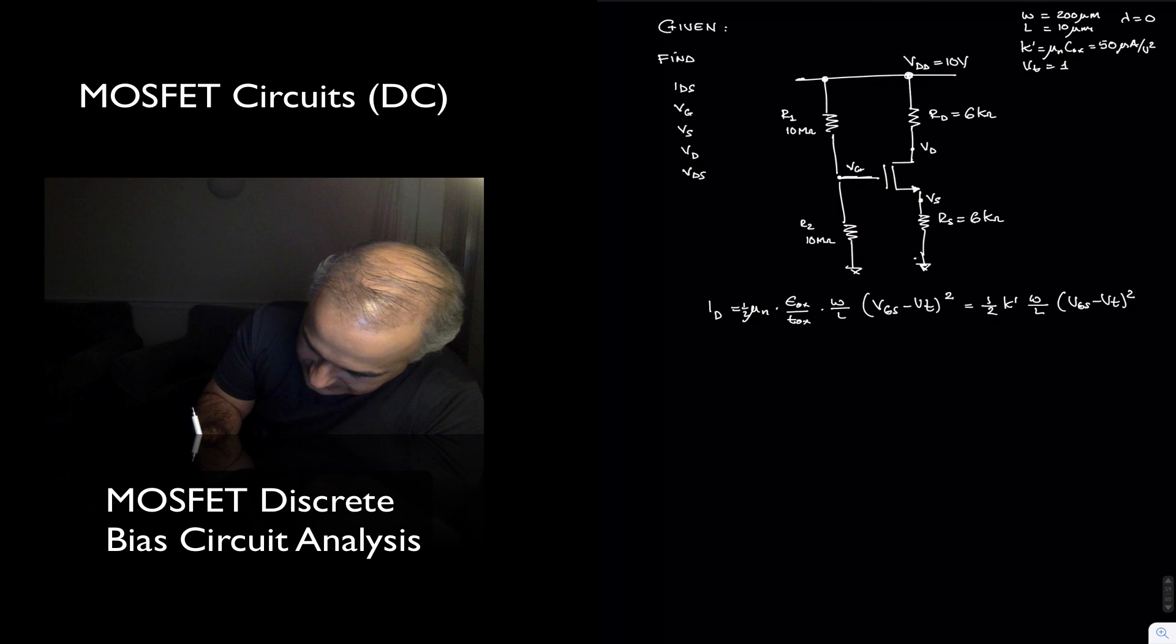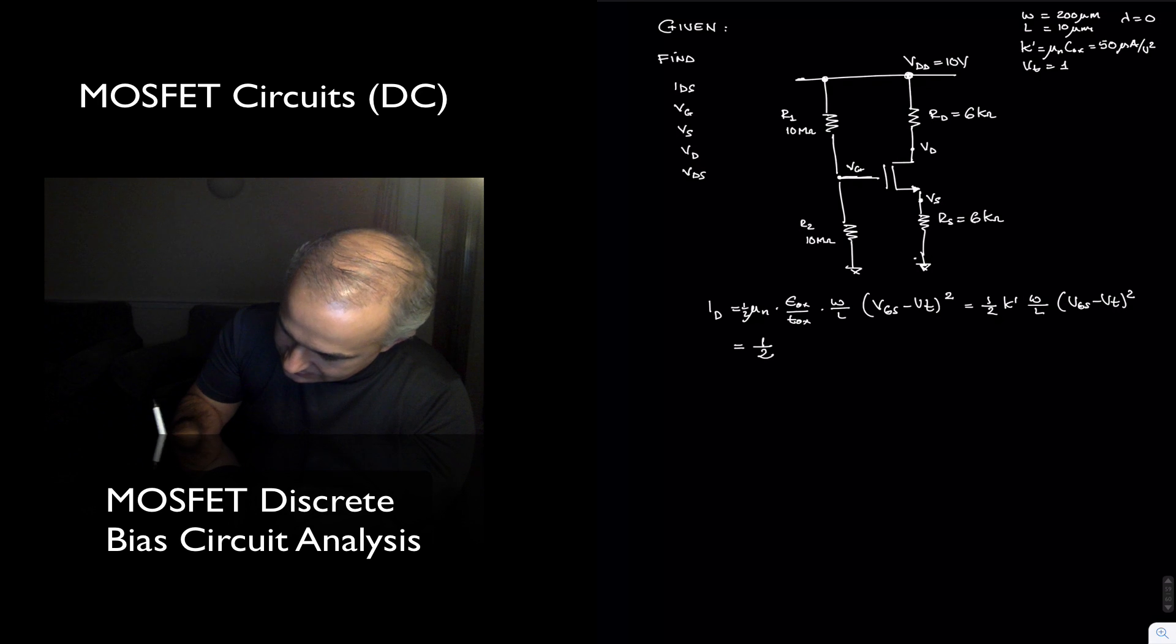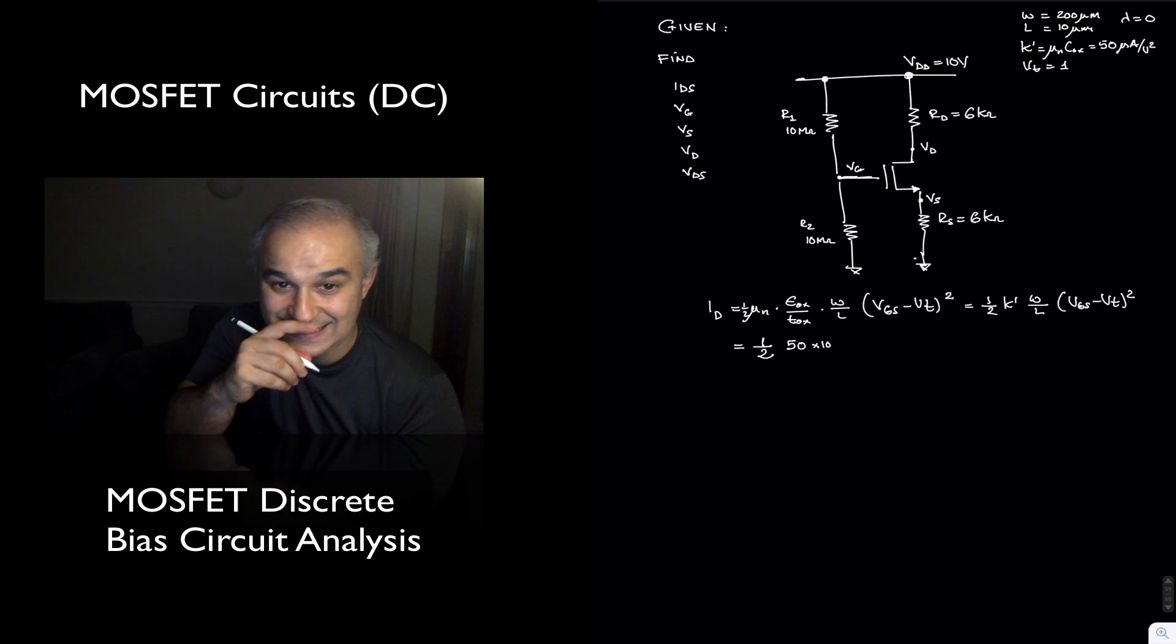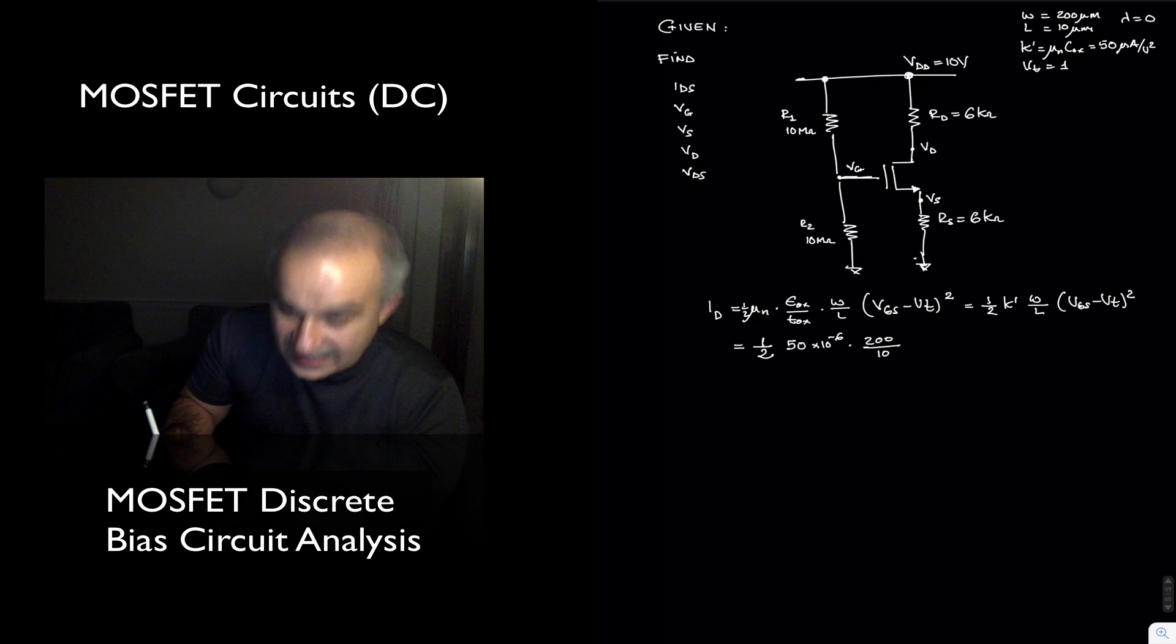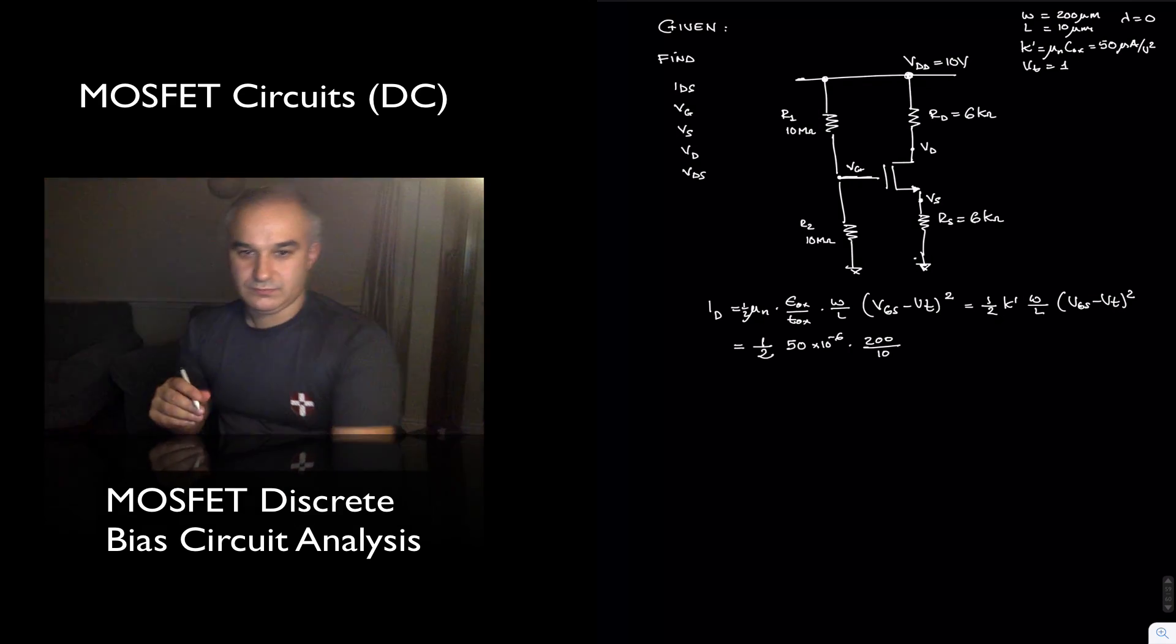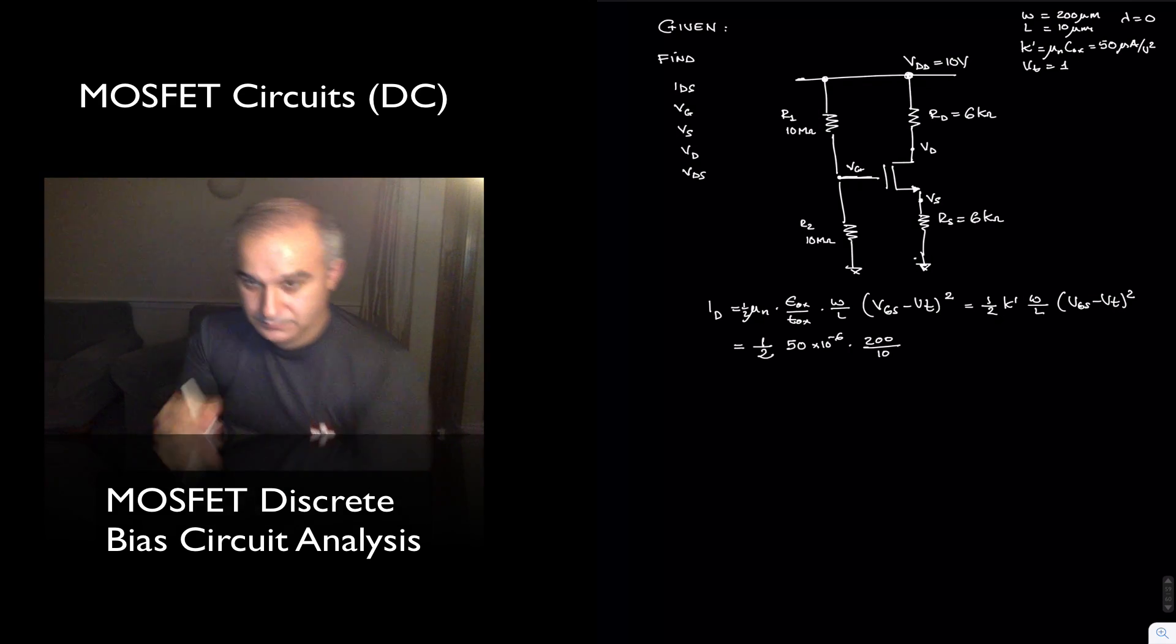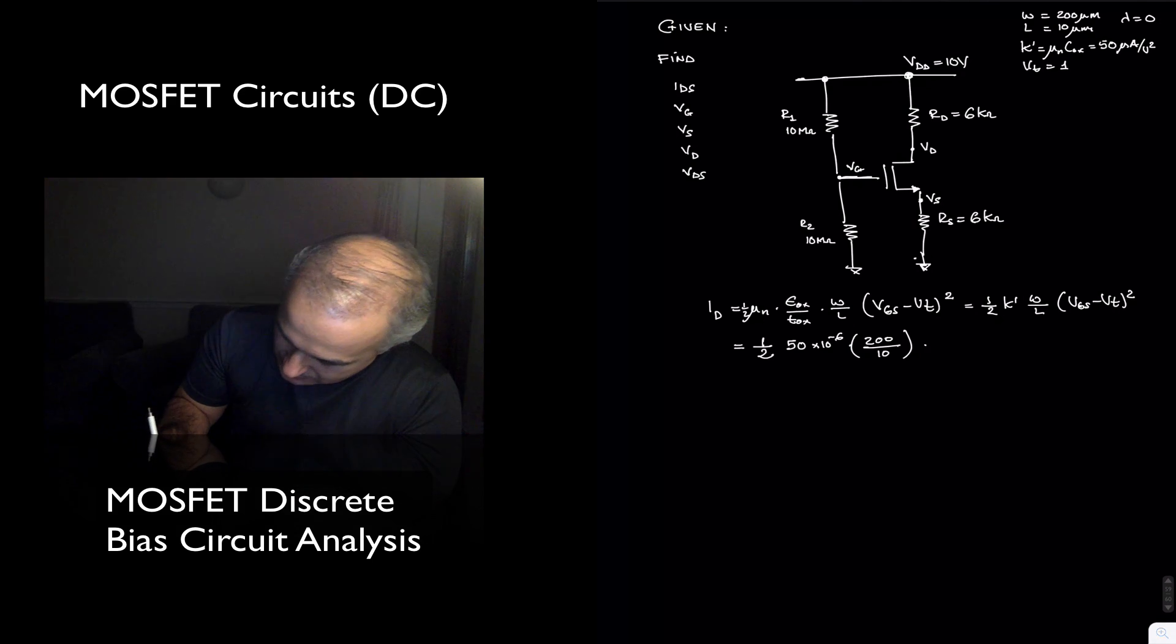In this case, what we have is one half k prime, 50 times 10 to the minus 6, and then we have 200 divided by 10 times (Vgs minus Vt is 1) squared.